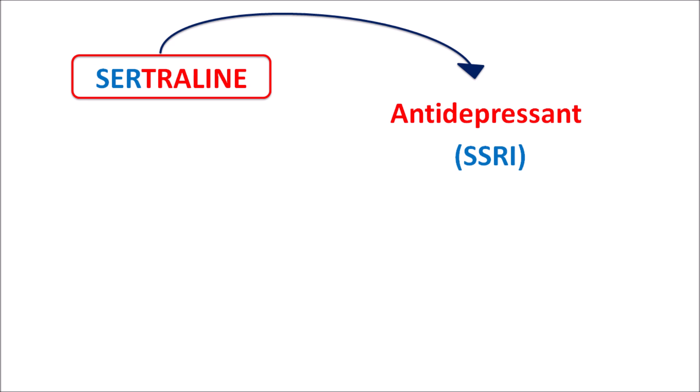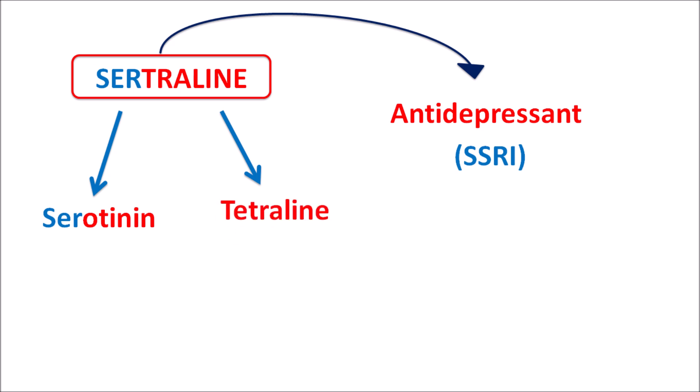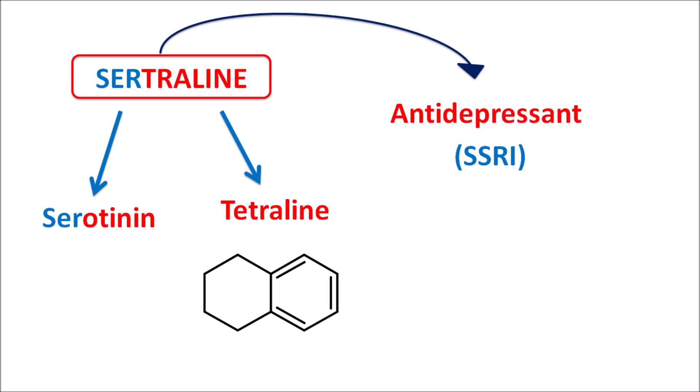Within the name, we can identify the prefix 'ser', which indicates this drug acts on serotonin levels. This drug inhibits the reuptake of serotonin, which increases serotonin levels within the synaptic cleft. The suffix 'traline' indicates this drug has the structure of tetralin — a tetrahydro derivative of naphthalene — so sertraline is a tetralin derivative.